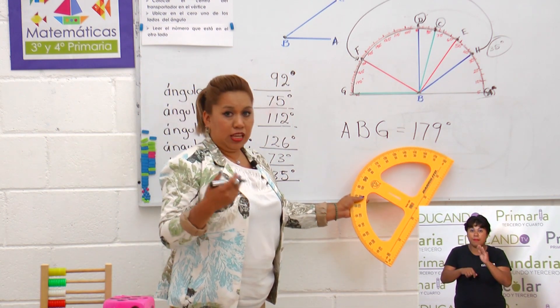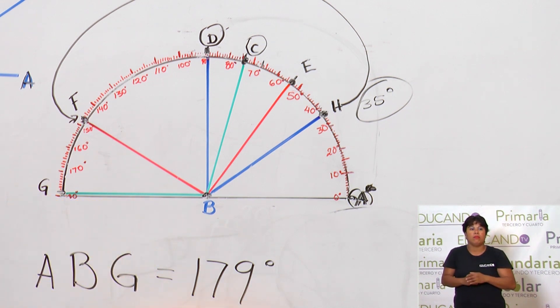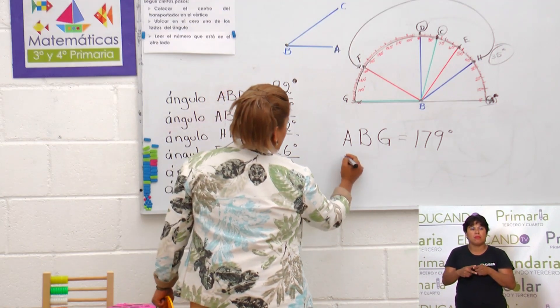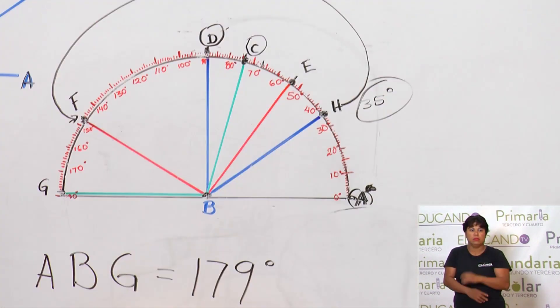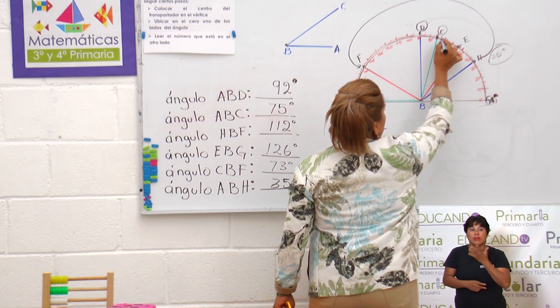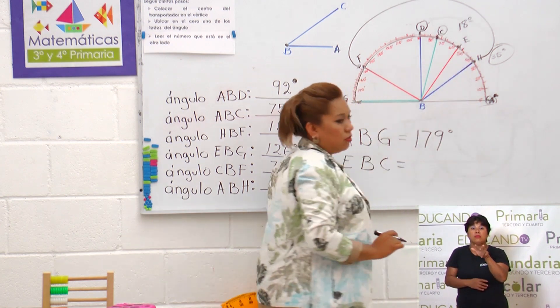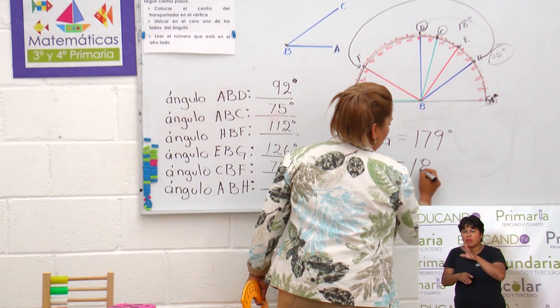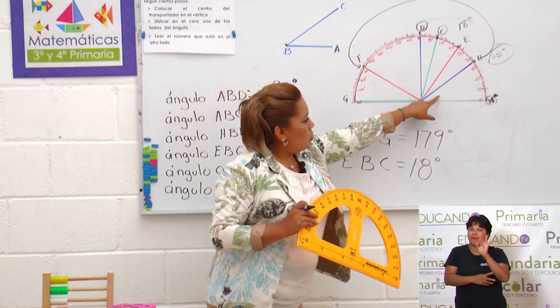¿Ya se le puede llamar llano aquí? No. Acuérdate que un ángulo llano mide exactamente 180 grados. Y si aquí tenemos 179, pues todavía no llega a un ángulo llano. ¿Qué otro ángulo pudiéramos medir ahí que no hayamos medido antes? Puede ser el ángulo E B C. Sería E B C. ¿Cuántos grados tiene? 10, 11, 12, 13, 14, 15, 16, 17 y 18. Tiene 18 grados. Y así podemos ir sacando más ángulos. Pero como ya sabemos cómo se utiliza el transportador, pues ya es más fácil poder saber cuántos grados tiene el ángulo que se está formando.